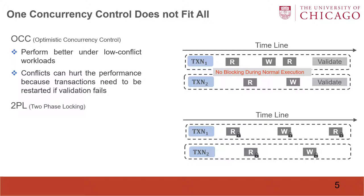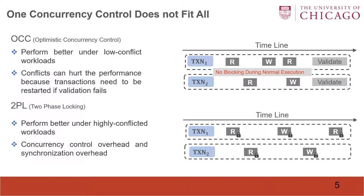In a highly-conflicted workload, we consider two-phase locking, which means transactions need to request locks before each read-write operation. It performs well under highly-conflicted workloads, but it suffers from higher concurrency control overhead and synchronization overhead, especially in a multi-core setting.